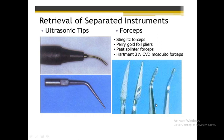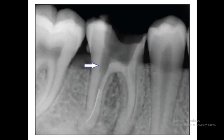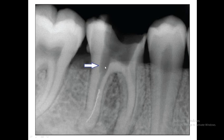If you can't see it, we tell the patient to make a radiograph. Here in this case, the file is in the middle third. Try to remove the broken file by passing another file alongside it — bring another file next to this file and try to pull it upwards. It might come out.